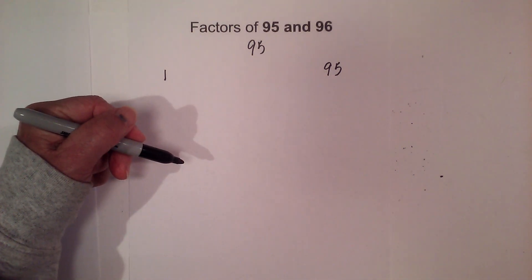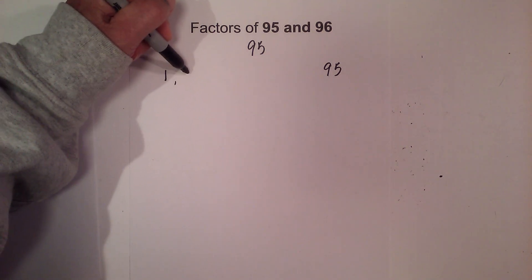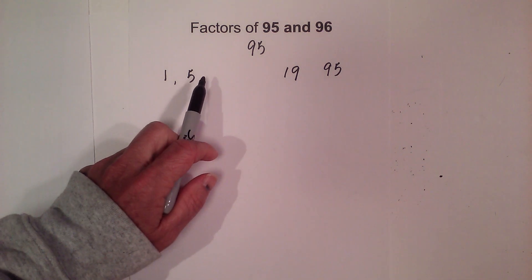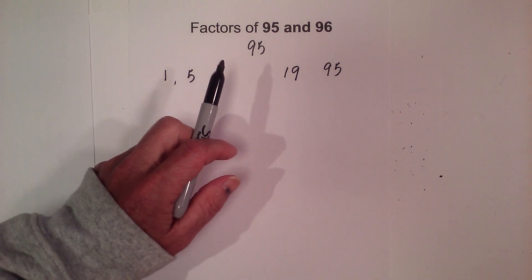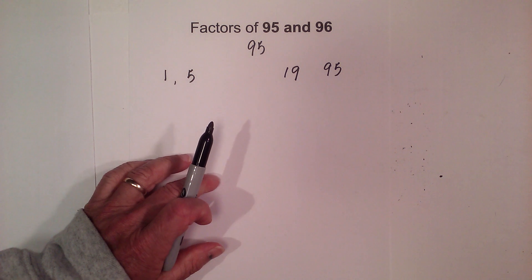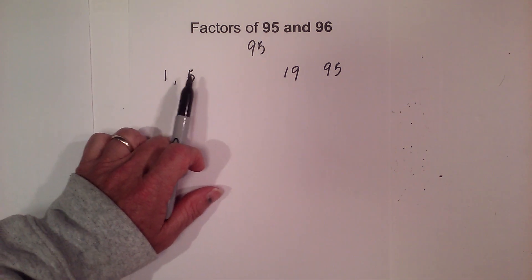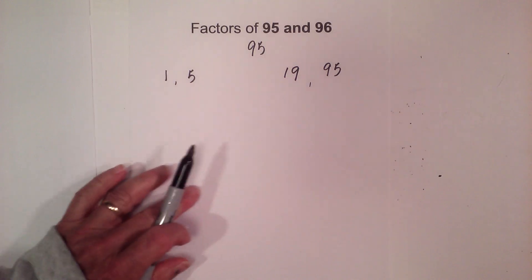Next, let's try 5 times 19. And then 6, 7, 8, 9, 10, 11, 12, 13, 14, 15, 16, 17, 18 do not go into 95. So the factors of 95 are 1, 5, 19, and 95.